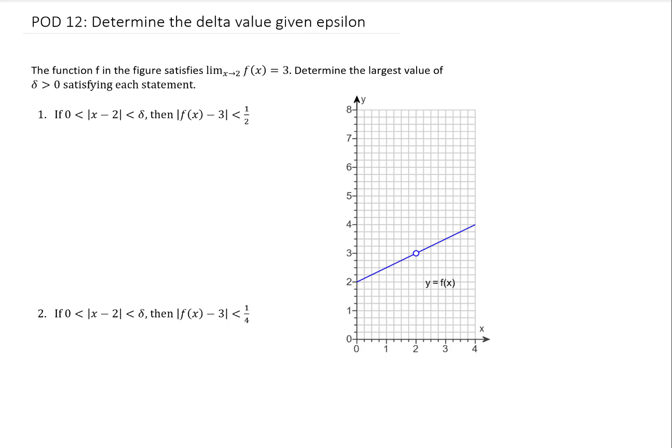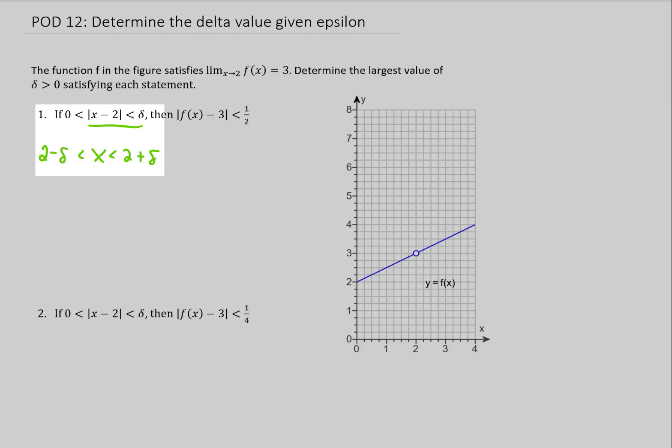I'll make sure that a link is popping up right now to a video that explains the concept of epsilon delta proofs. And in that video we decided this notation right here is a compressed way to write x is between 2 minus delta and 2 plus delta. And this notation right here means that our function value or our y value is between 3 minus 1 half and 3 plus 1 half.